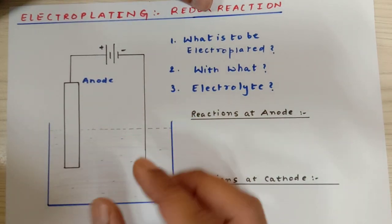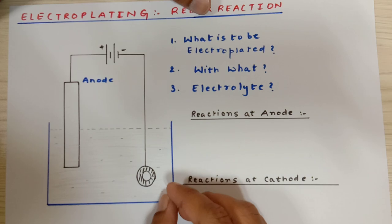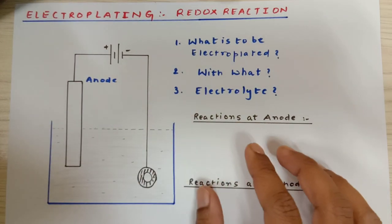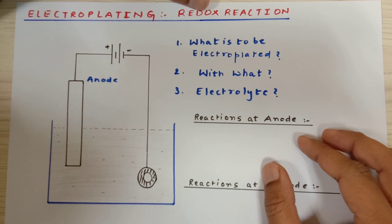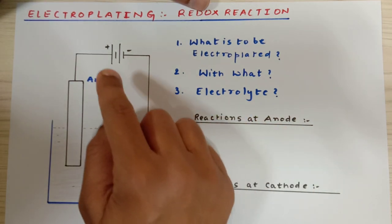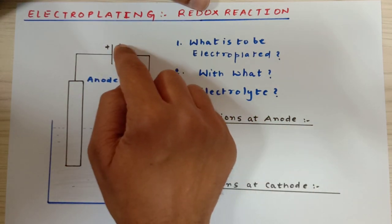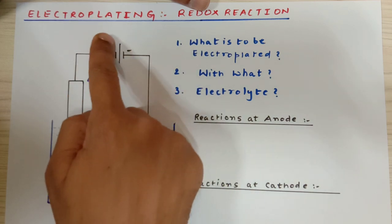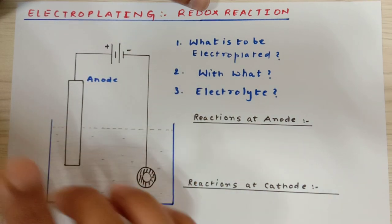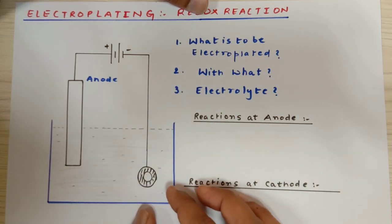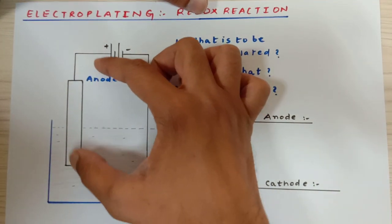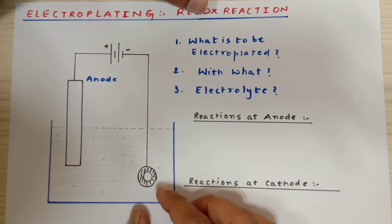In case of a galvanic cell, the reverse happens. I don't want to pull you into the more confusing part. But I must always say that here, since you are using a battery, this is anode, positive terminal is anode, and here oxidation is going to take place. Whereas if you are actually making your own battery, the one which would be positive would actually be a cathode.